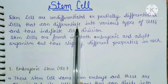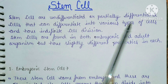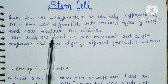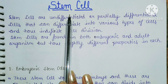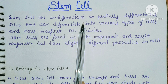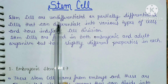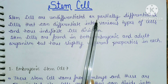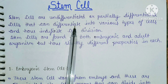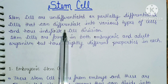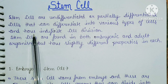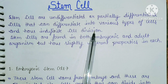Stem cells are undifferentiated or partially differentiated cells that can differentiate into various types of cells and have indefinite cell division. Undifferentiated means that they do not have a specific function, and they can be divided into any type of cell.